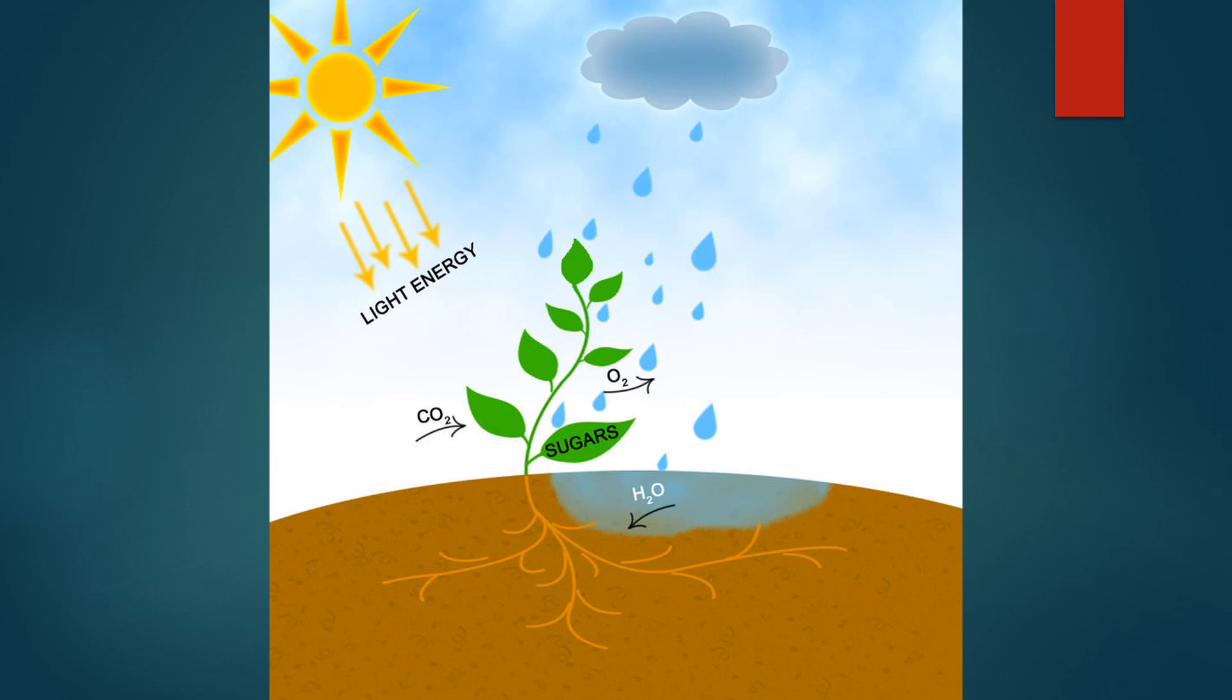It absorbs the sunlight with the help of chlorophyll in chloroplasts. With the help of xylem, water is transferred to the plants just like a straw. The carbon dioxide is absorbed with the help of stomata present in the leaves.